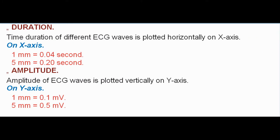Duration: Time duration of different ECG waves is plotted horizontally on the x-axis. On the x-axis, 1 mm equals 0.04 second and 5 mm equals 0.20 second. Amplitude of ECG waves is plotted vertically on the y-axis.